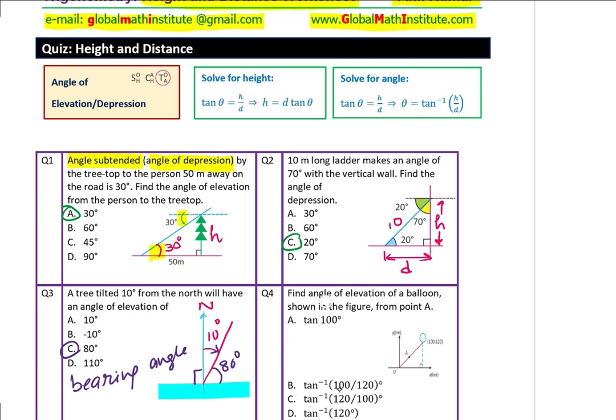Next question here is, find angle of elevation of a balloon shown in the figure from point A, right? So, from point A, which is this point here, the figure is very small and we have a coordinate point, let me read this coordinate point, which is 100, the value is 100, 120, right? So, that is the coordinate point of the balloon. We need to find the angle of elevation.